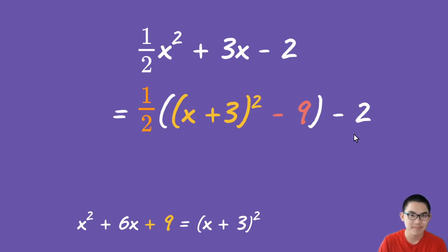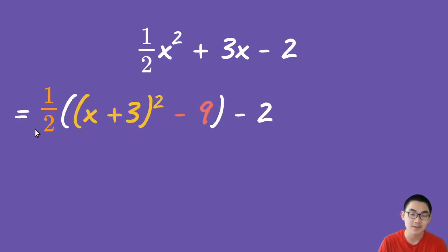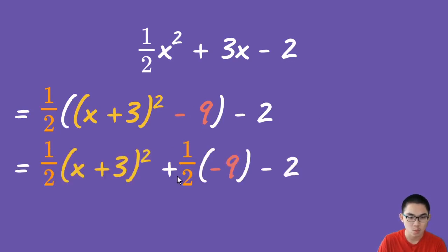Now the last step is to simplify it. Before I do that, I'm going to bring this function again to the left so it's easier for us to see. You want to bring the -9 out of the bracket. When you do that, you also multiply it to ½. So ½ times -9 is -9/2.